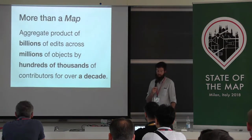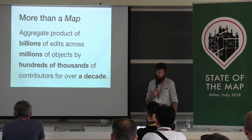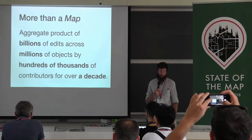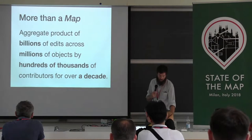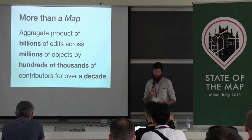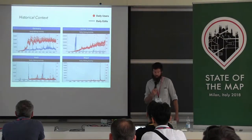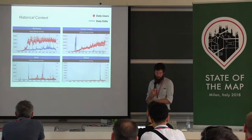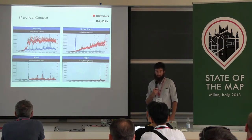In researching these events, it quickly became obvious that OSM is much more than a map. The current map is the aggregate product of billions of edits across millions of objects performed by hundreds of thousands of contributors since 2004. So how do we better understand the nuances of the evolution of the map and the community? The historical context of different regions in OSM is critical to understand. These are graphs showing the daily editing activity for four different countries.